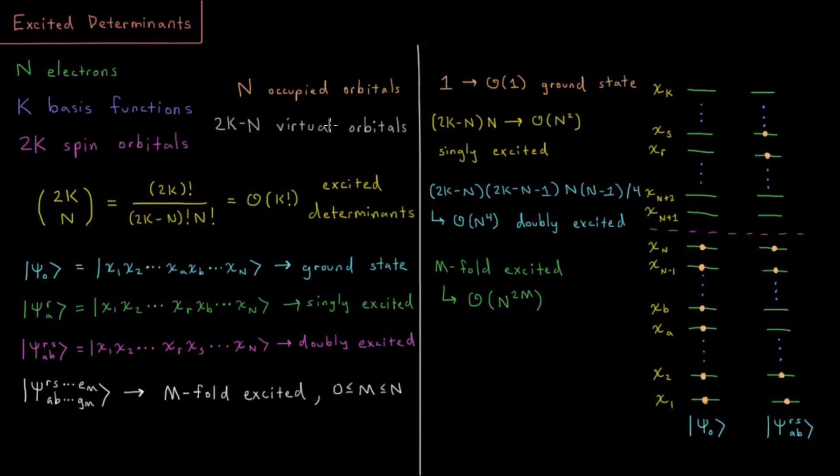So the question would arise then, how many of these determinants are there? Well, if we have 2k spin orbitals and we're choosing which n of them are going to be occupied, then that would be the combinatorical number 2k choose n, indicated by this formula. So that's 2k factorial divided by 2k minus n factorial and also divided by n factorial.